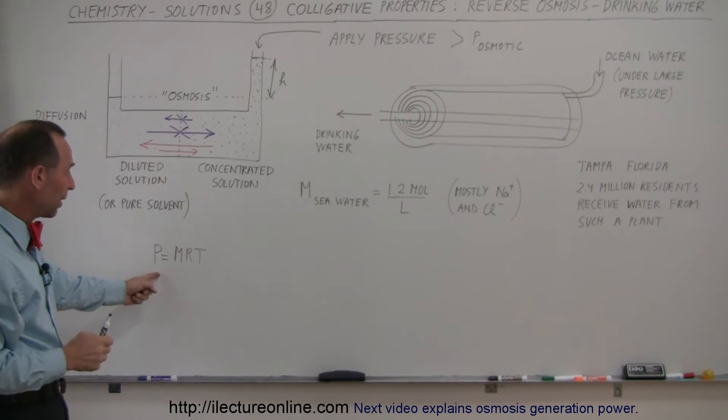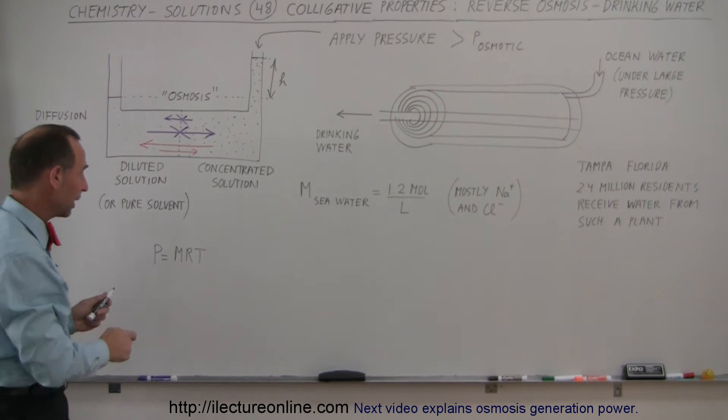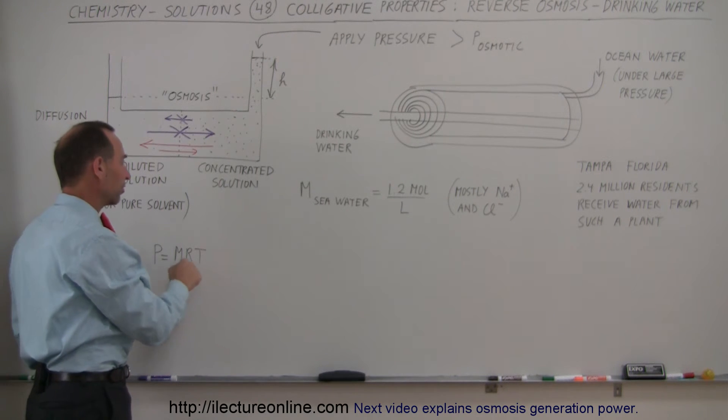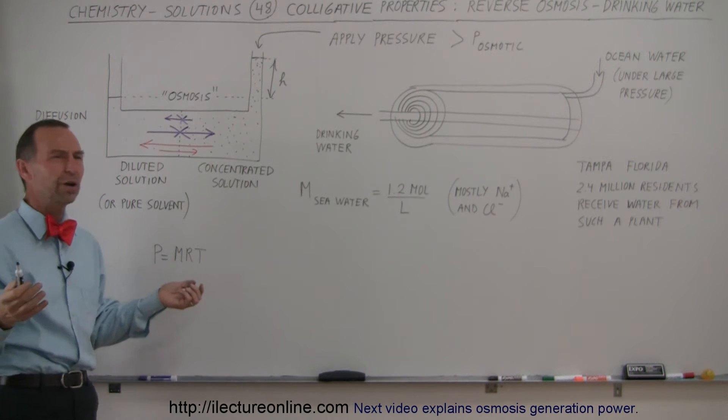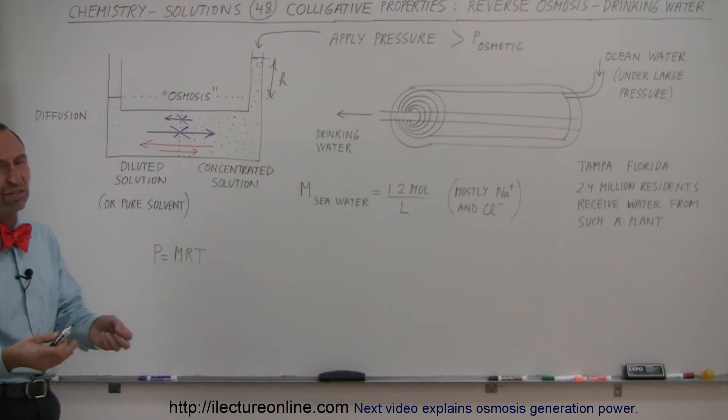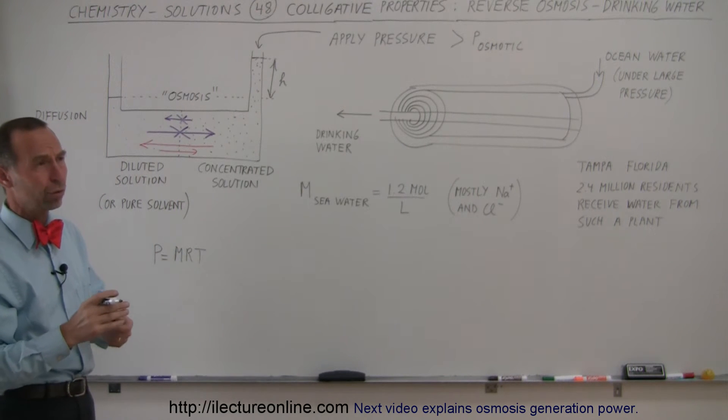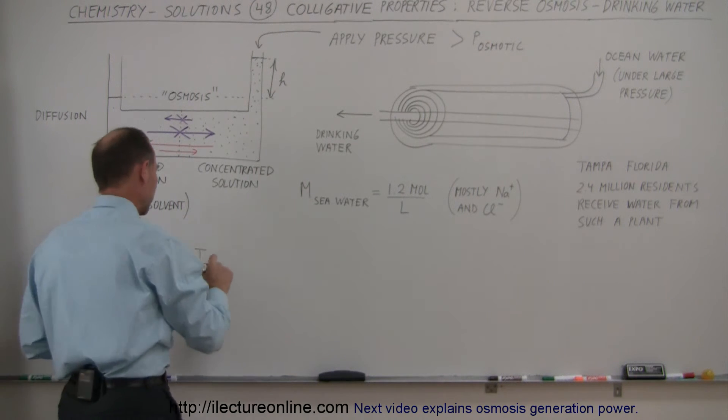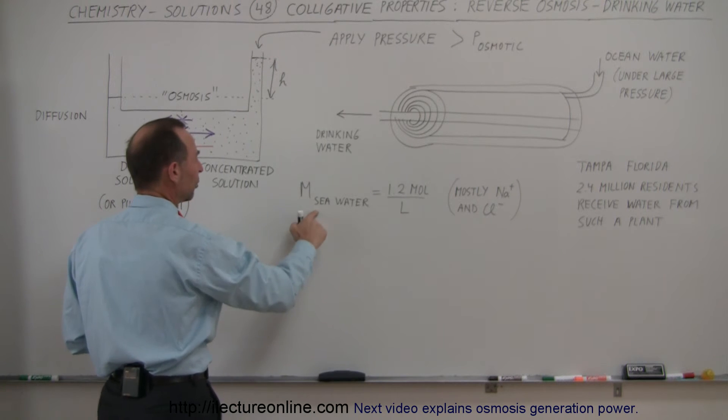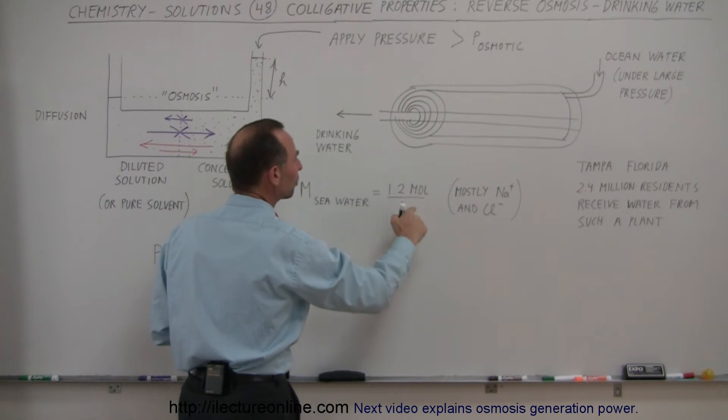So how much pressure is required? Well, we have to multiply the molarity times the gas constant times the temperature of the water and let's say the water is probably at a temperature of, let's say, 15 degrees centigrade. So 15 degrees centigrade is about 288 Kelvin. Alright, so molarity for seawater is about 1.2 moles per liter.